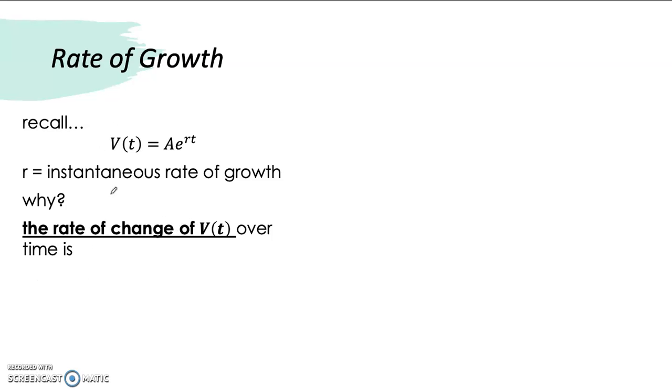So, here we see the rate of change of V(t). We can write it as dV per dT is equal to A, let's write this as f(t), where f(t) equals to R times t. So, it's just f prime t, Ae to the f(t) is A e to the rt.